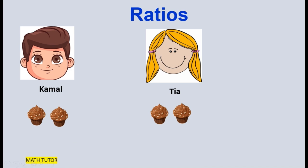Here there are two kids, Kamal and Tia. Both are having cupcakes. Kamal has two cupcakes and Tia also has two cupcakes. This means the ratio of cupcakes for Kamal and Tia will be 1 is to 1.